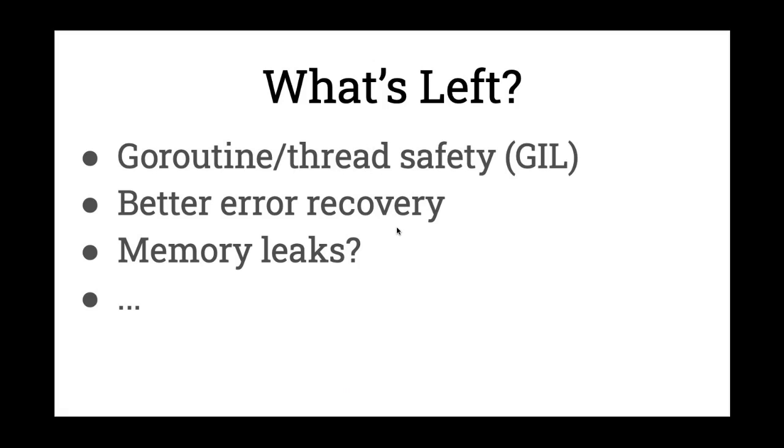So what's left? First, thread safety, or Go routine safety. Python has a global interpreter lock. When you call it from the C level, you need to make sure that you're on the same thread calling Python. We can probably add a sync.mutex to our outliers and finish with this issue. But maybe there are other things that we need to be aware of. Maybe we need to lock to the OS thread. I would like to have better error recovery. What I'm doing right now is I'm getting the last error from Python and returning it as an error. But Python can also give you a stack trace and many other things. So maybe I can utilize that to show better errors and maybe do better error recovery in the future.